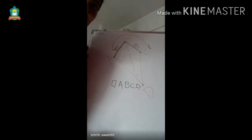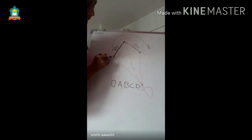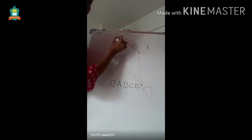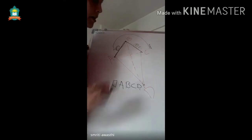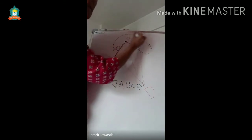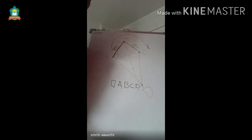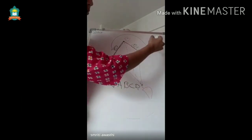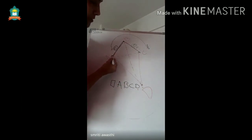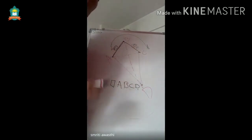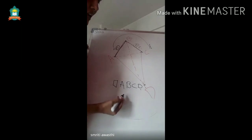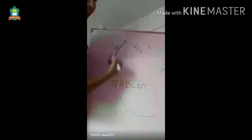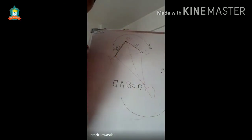Similarly, CD and DA will be another pair of adjacent sides, and DA and AB will be yet another pair. Remember, I am following the clockwise direction. If you go anti-clockwise, the quadrilateral would be named ADCB and everything follows the same pattern in that direction. So there are two ways to name a quadrilateral — clockwise or anti-clockwise.